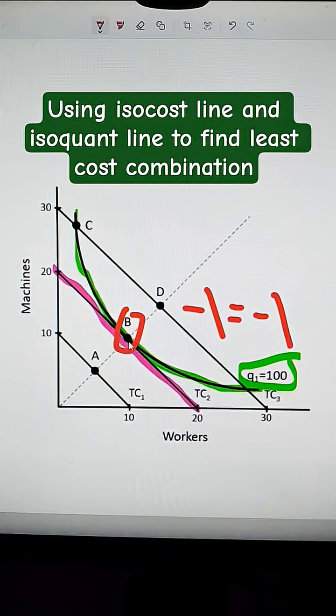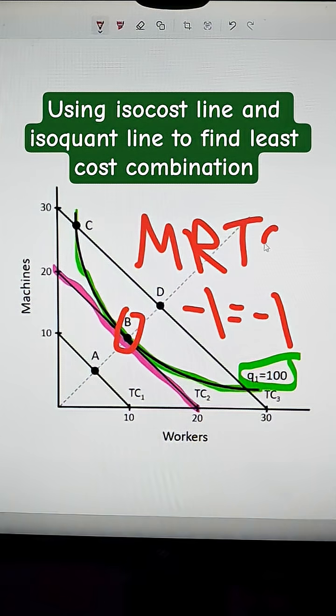Now the isoquant slope is known as the marginal rate of technical substitution. So where the marginal rate of technical substitution is equal to the cost ratio, or the isocost line, then you've got your least cost combination. So right here it's B, and that's how we figured out exactly what the number was.